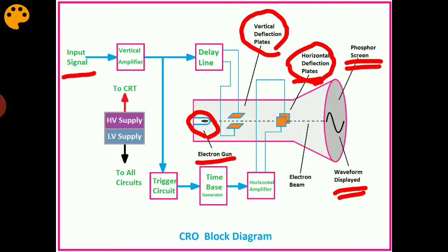The input signal is fed into the vertical deflection plates, because in a CRO the y-axis corresponds to the voltage of the input signal. The horizontal deflection plates are fed with the timing signals — in a CRO the x-axis corresponds to time, so the horizontal deflection plate corresponds to the timing signal.